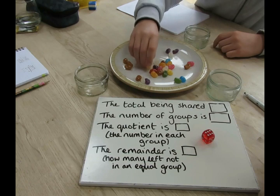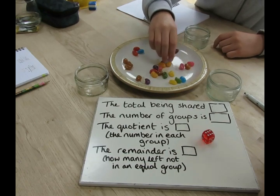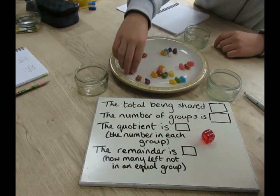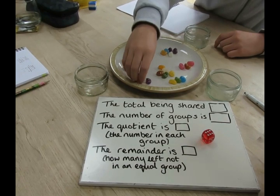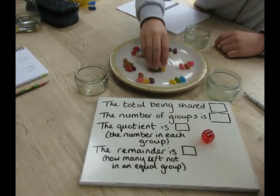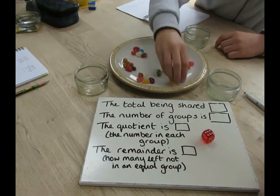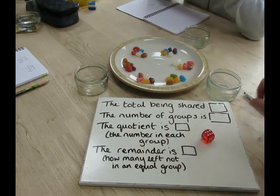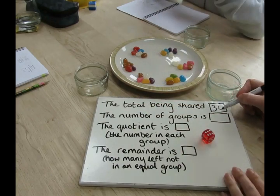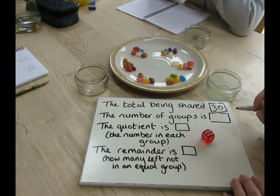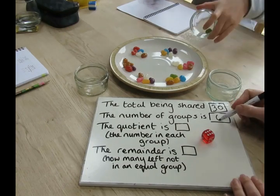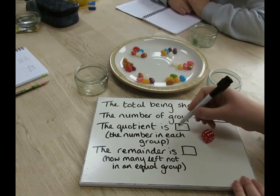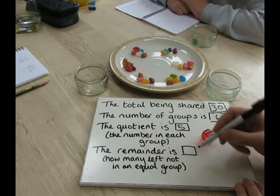How many do you think will be in each group? Five. So Luke thinks there will be five in each group across six groups — he's using the fact that six times five is 30. And he was right: five in each group, so he might get one jelly bean to eat. The total being shared was 31, the number of groups was six, five was in each group, and Luke got a remainder of one.